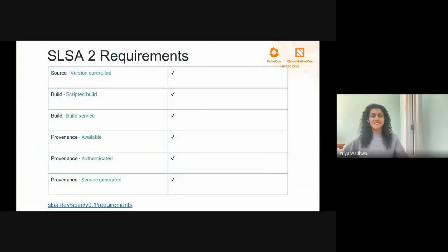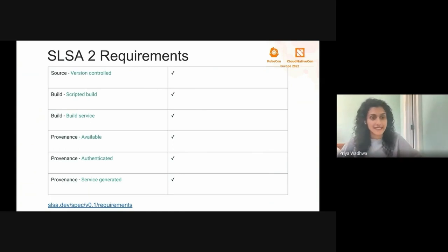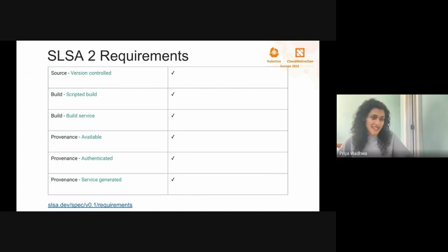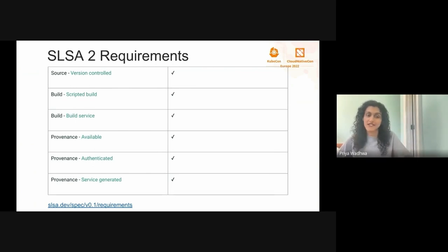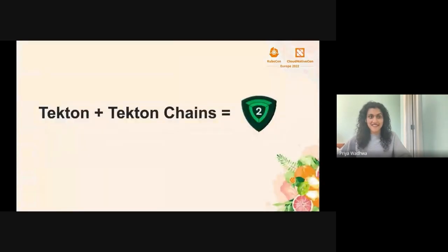Just by adding Tekton Chains into our existing Tekton deployment, we were able to achieve SLSA level 2. Assuming your code is already in version control, our builds are scripted in Tekton, this build service is Tekton, provenance is available, authenticated, and service-generated since it's been generated by Tekton Chains. So Tekton plus Tekton Chains equals SLSA level 2.